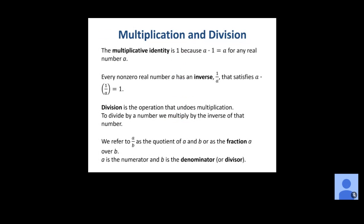Now multiplication and division. The multiplicative identity is one — any real number times one gives that same real number. Every non-zero real number has an inverse, which is one over that number, because a times 1/a cancels to give 1. Division is the operation that undoes multiplication; to divide by a number, we simply multiply by its inverse. We can refer to a over b as the quotient of a and b, or simply as the fraction a over b with a as the numerator and b as the denominator. Those two things are equivalent to each other.